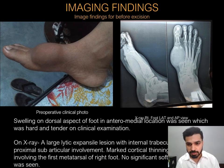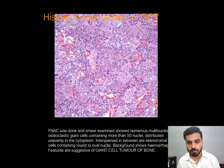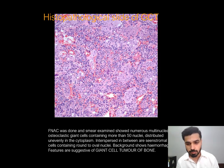The differential diagnoses on the basis of the site of involvement include aneurysmal bone cyst (ABC) and GCT. FNAC was done and the smear showed numerous multinucleated osteoclastic giant cells with more than 15 nuclei distributed unevenly in the cytoplasm. The background on the slide shows hemorrhage. Features are suggestive of giant cell tumor of bone.